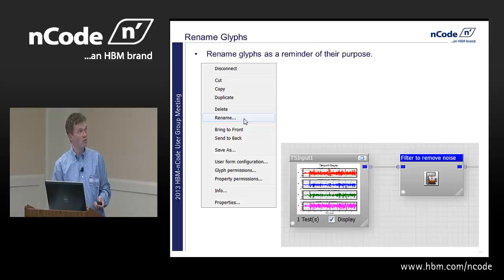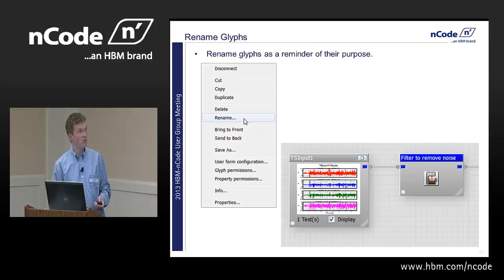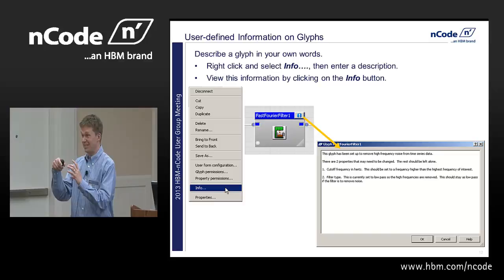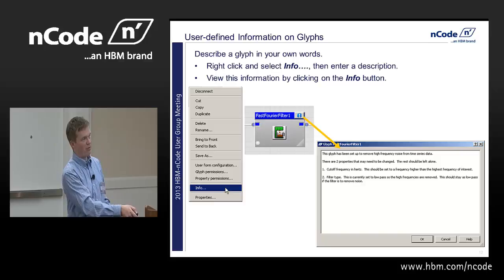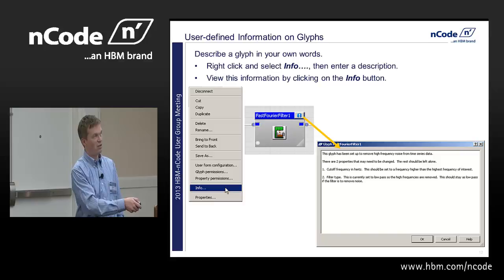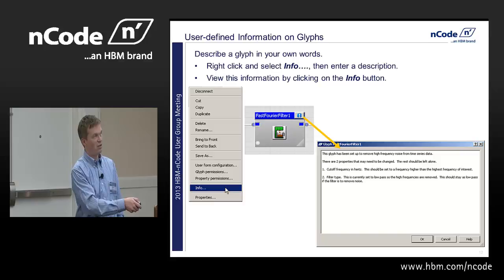There's also an option called Info on a Glyph — kind of like putting a callout on a cell in Excel. A little pop-up comes up and you can type whatever you want. From that point forward, the Glyph will have a little 'I' icon on it. Click that, and you can describe what this Glyph is doing in sentences or paragraphs.